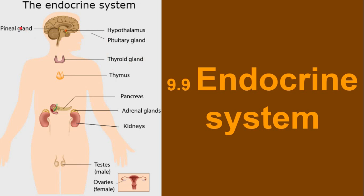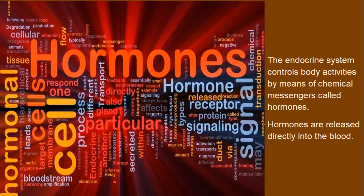Behind the thyroid gland there are also parathyroid glands. The pancreas is dual in function — it has both exocrine and endocrine secretion. Adrenal glands are also part of the endocrine system. The kidneys also play a role by secreting hormones such as renin. Gonads are also present — in males the gonads are testes, and in females the gonads are ovaries.